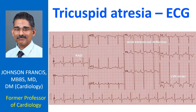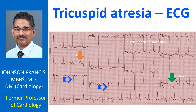Right atrial overload is manifest as tall P waves in lead 2, and left ventricular hypertrophy with strain pattern is seen in lateral leads with tall R waves, ST segment depression, and T wave inversion. The axis is leftward with predominantly negative QRS in leads 3 and AVF.